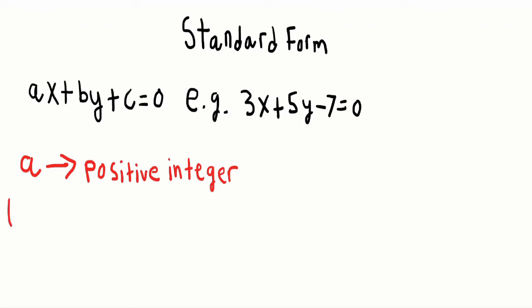Our next variables are B and C. B and C must be integers. That means they can be positive, they can be negative — they just have to be whole numbers. They can't be fractions or decimals.